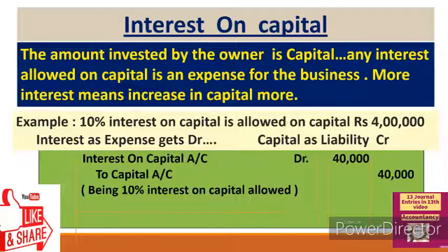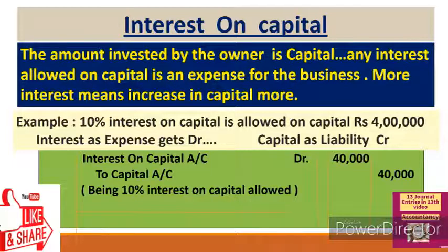Next: interest on capital. Capital is the amount invested by the owner in the business. When the owner invests money or goods, he expects a return — so interest is allowed on capital. Any interest allowed on capital is an expense for the business. Also, the more interest allowed to the owner, the more the capital increases. Capital is a business liability; liabilities always have a credit balance. Capital is also a personal account.